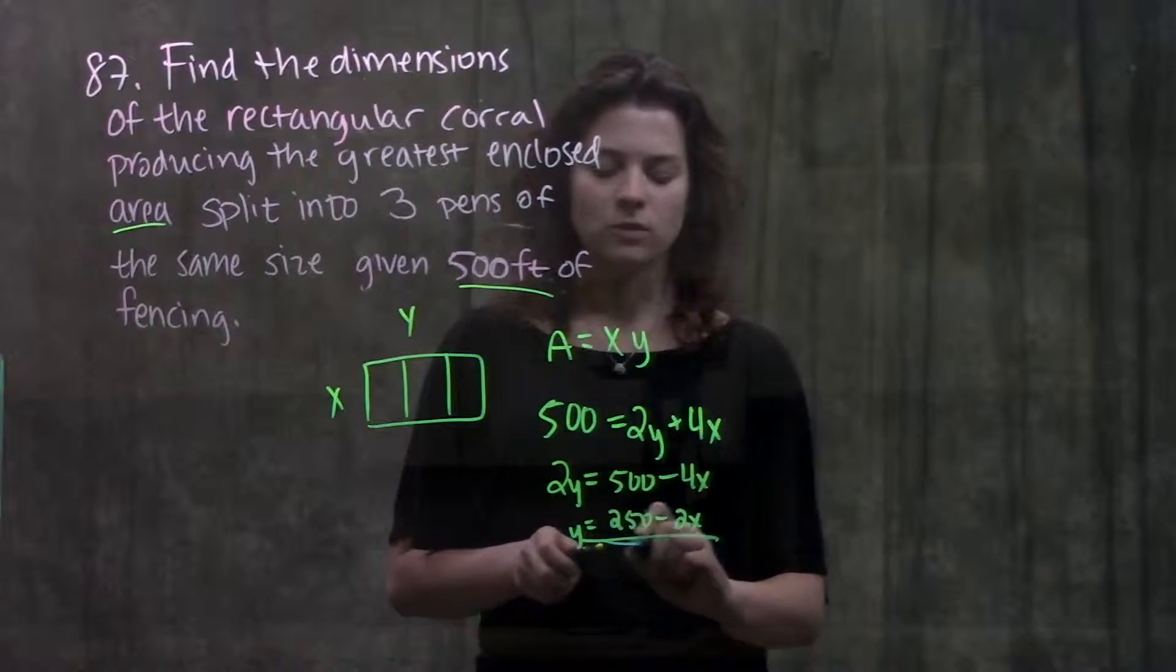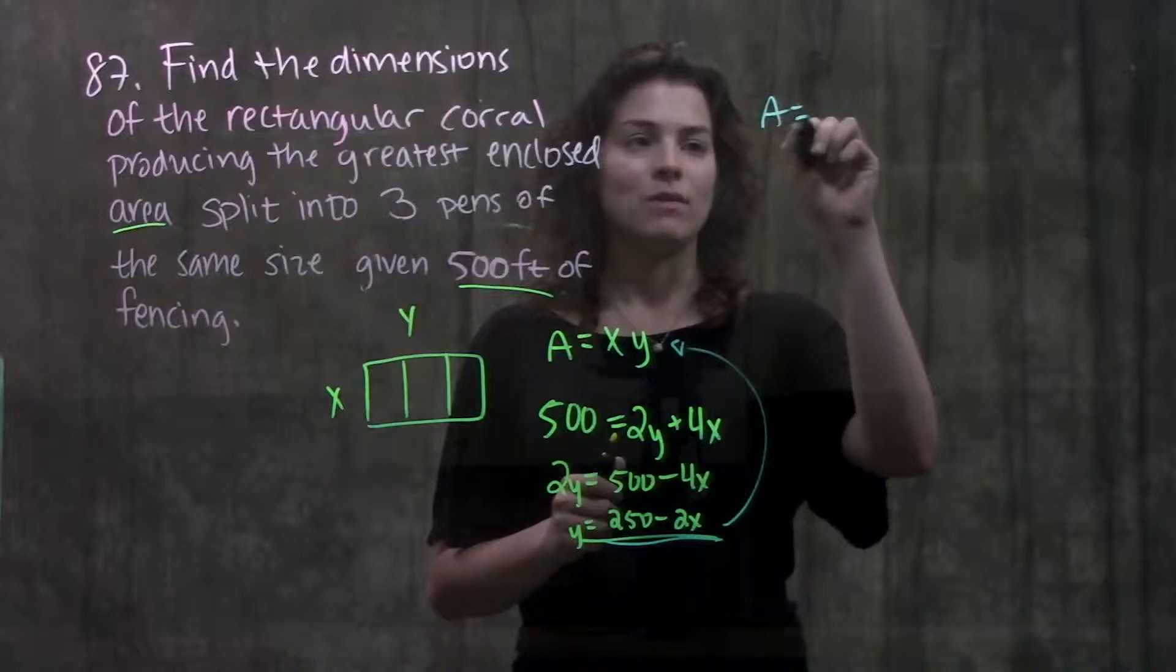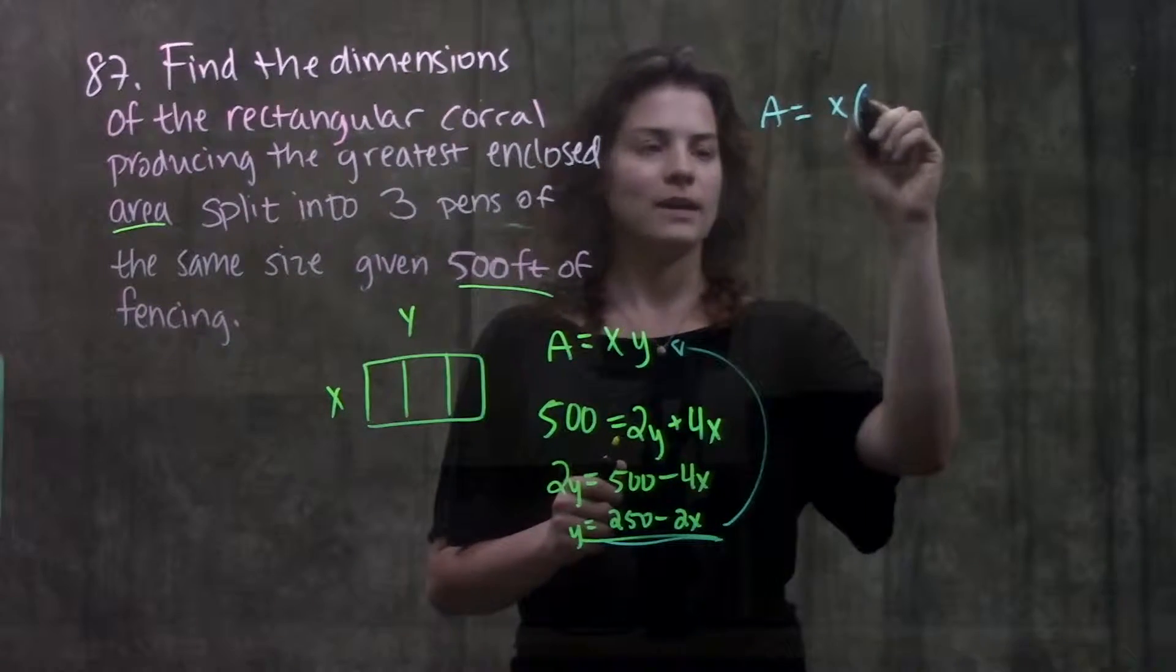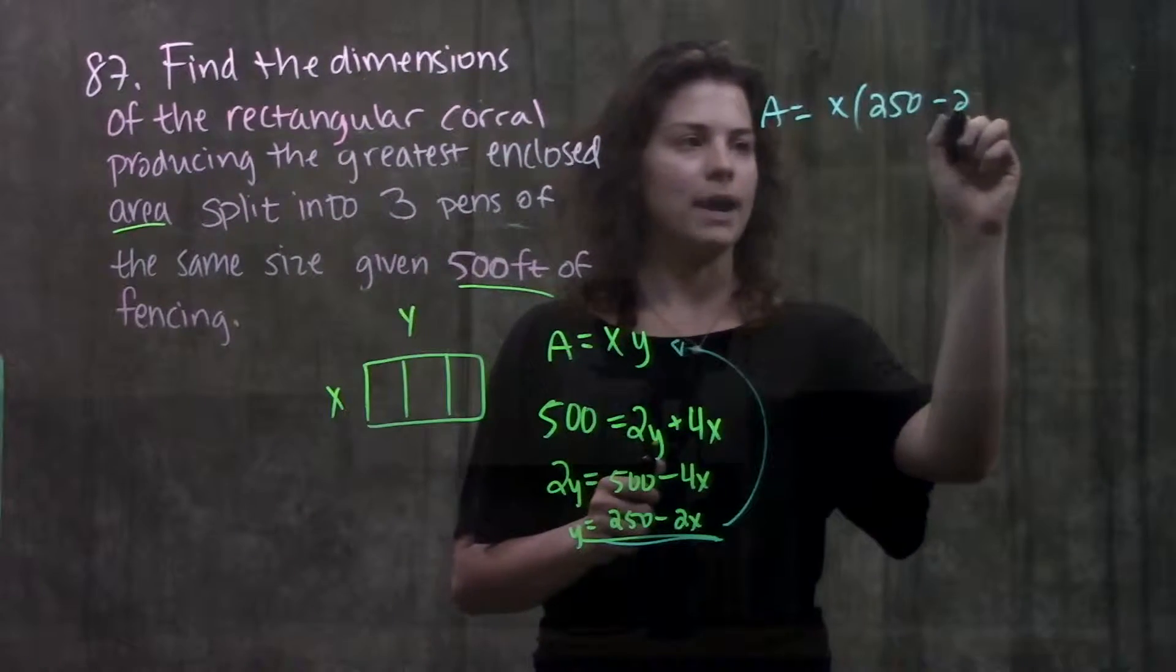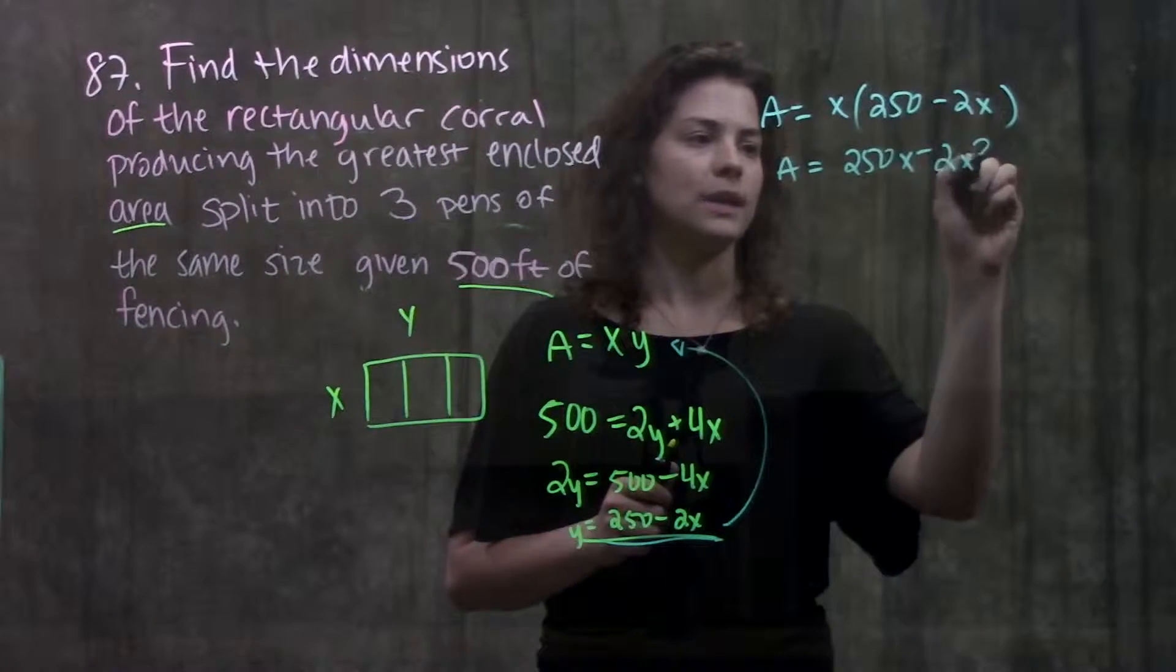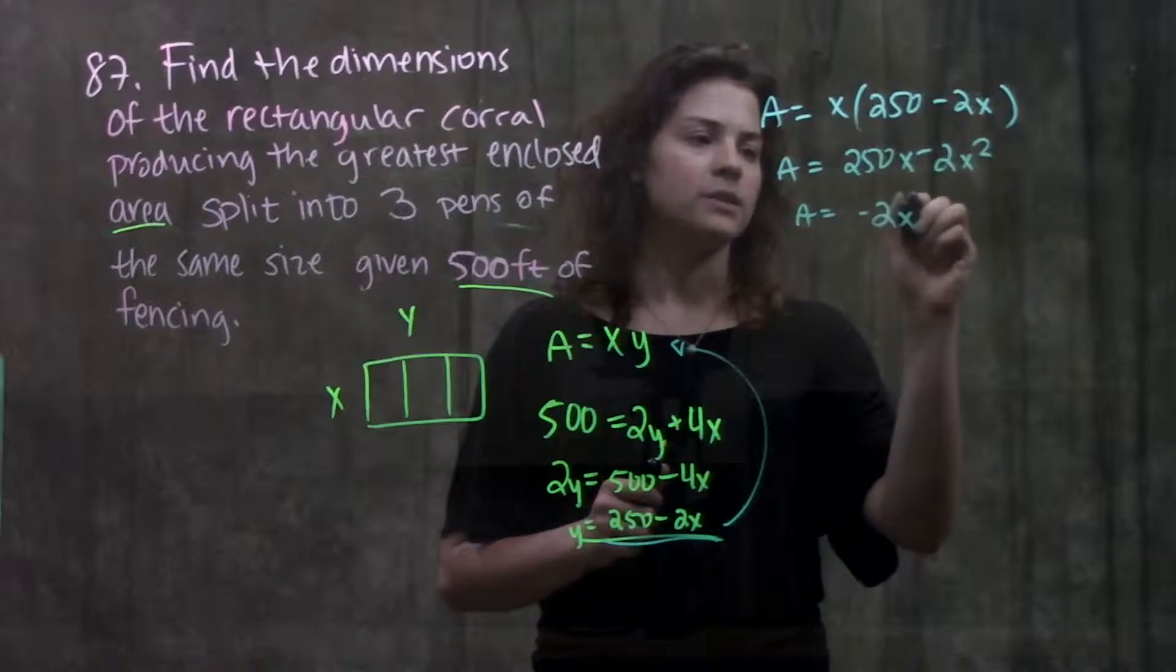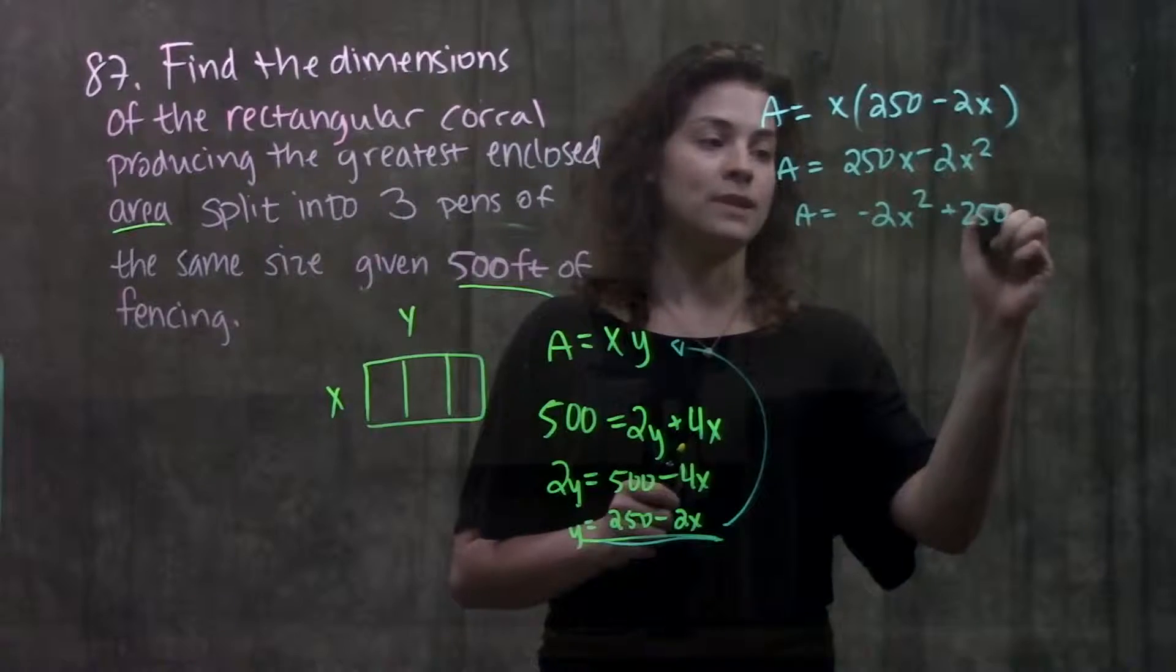Alright so let's take this y that we just solved for and plug it into our area formula. When we do that we'll get area is equal to x times 250 minus 2x which becomes 250x minus 2x squared or we're rearranging it just so that it's in standard form minus 2x squared plus 250x.